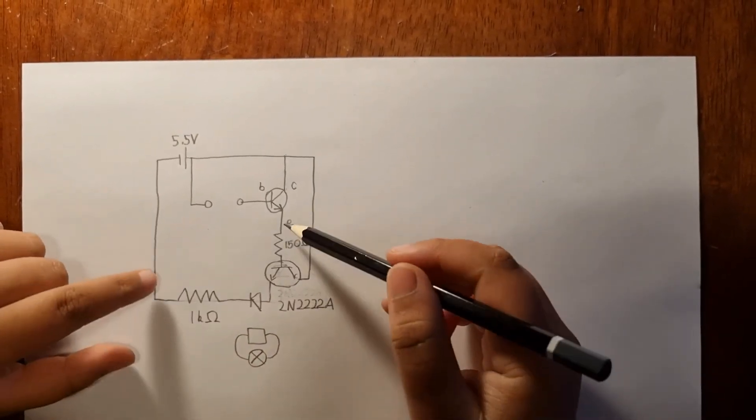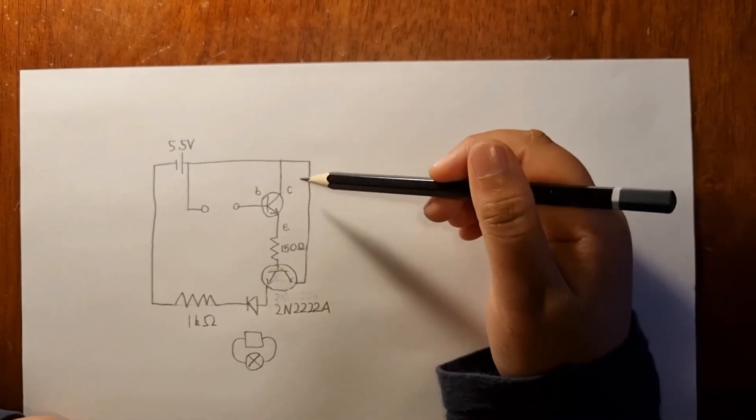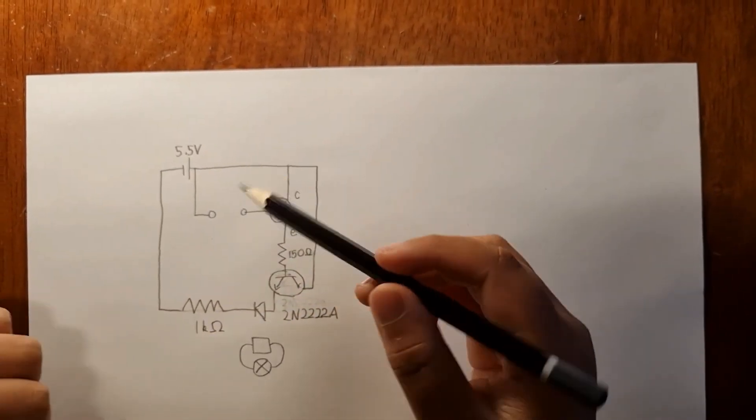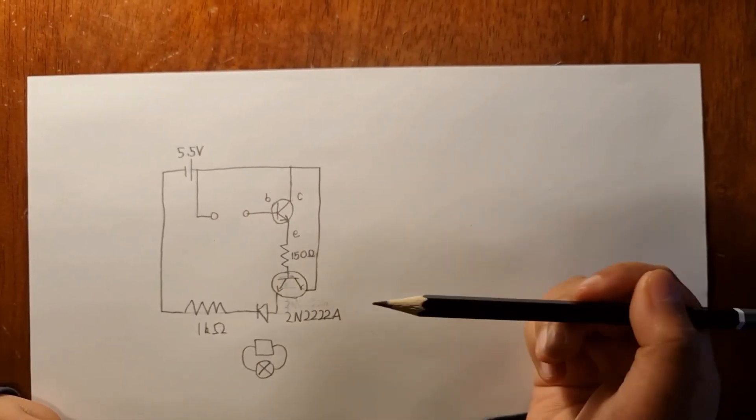And also, you can use this same circuit as a water sensor. If you cover up all of these components, if the water touches here because water is conductive, it will light up the LED.